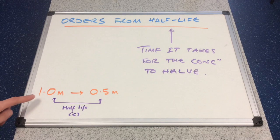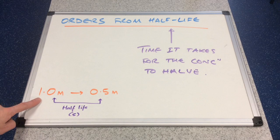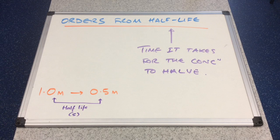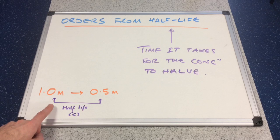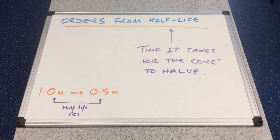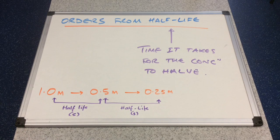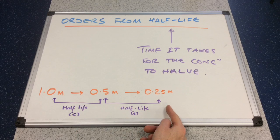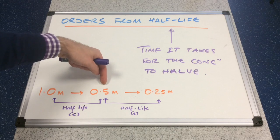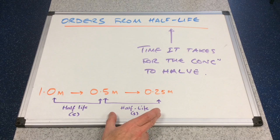So you can see I've written in the corner here: to go from 1 mole per decimetre cubed to 0.5 moles per decimetre cubed, that's a halving of concentration. The time it takes for that to happen would be classed as the half-life. To go from 0.5 to 0.25 moles per decimetre cubed, i.e. to half the concentration from here, would be classed as the next half-life.